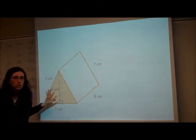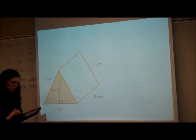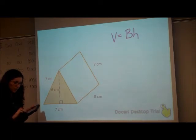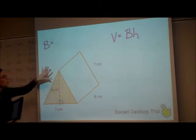So I have this triangular prism. I'm going to start by writing out my volume formula. Volume equals area of the base times the height.